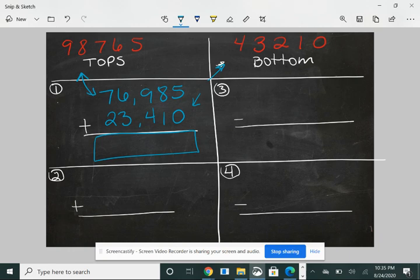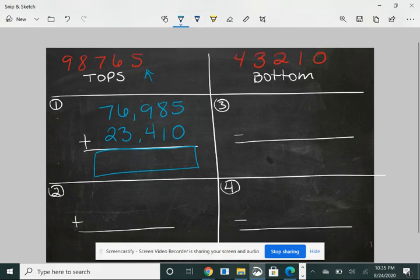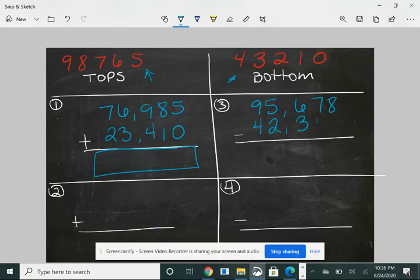Okay, now I'm going to do one of the subtraction problems so that you can see. And again, I'm going to use the numbers from the top side for the top. And I'm going to use the number 95,678. And then I'm going to use the numbers from the bottom side for the bottom. And I'm going to use 42,310. And then again, you have to solve.